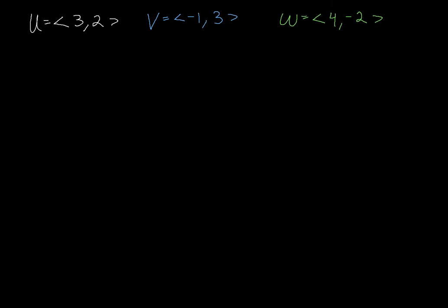Let's take a look at a few of the operations we can perform with vectors. One of the most basic operations is addition. I've written up a few vectors here — u, v, and w — and I've given their component forms, the x and y components respectively, for each of those three vectors.